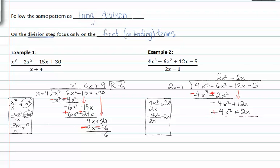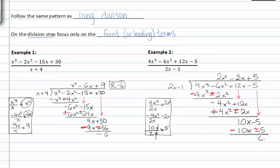Change the signs and add them together — negative two x. Drop down the next term. Take the first term of the dividend, divide it by the first term of the divisor, and we get five. Put the five in the quotient, multiply, change the signs, and we get a zero remainder.